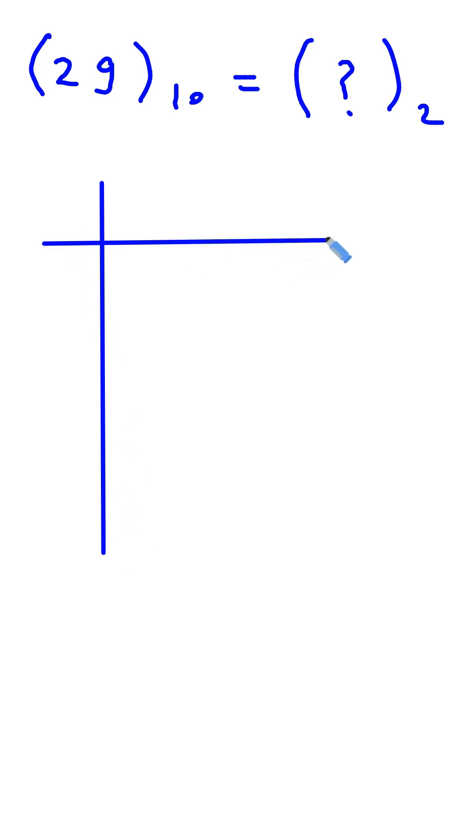So first of all what we will do is write it like this. Now here we will write 29, then we have to divide this by 2. So if we divide this by 2 it will be 14 and the remainder will be 1.